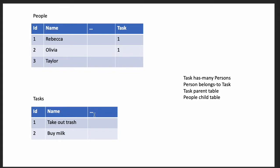It depends on the relationship between the tasks and people in your organization. For instance, if these were larger tasks or big projects, they may have more than one person working on them. On the other hand, they may be small tasks and one person may be assigned to multiple tasks. Sometimes both of those scenarios are too simple and you need more flexibility.